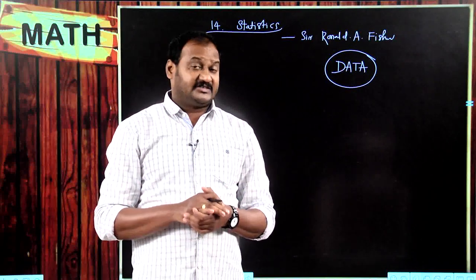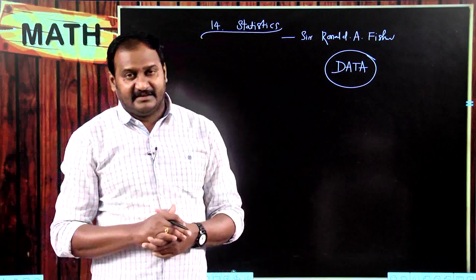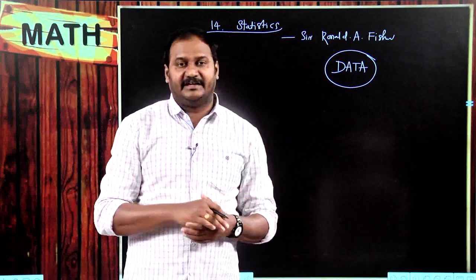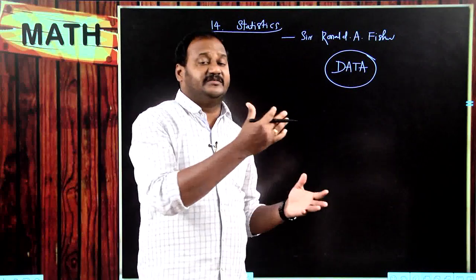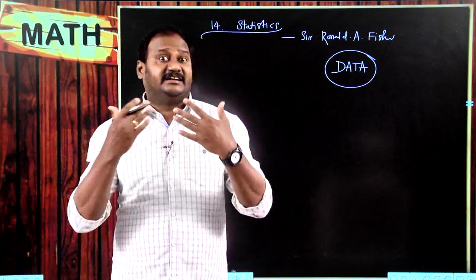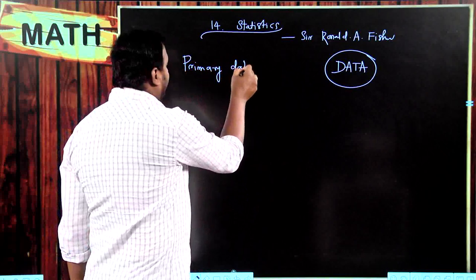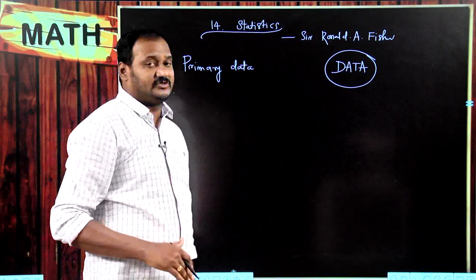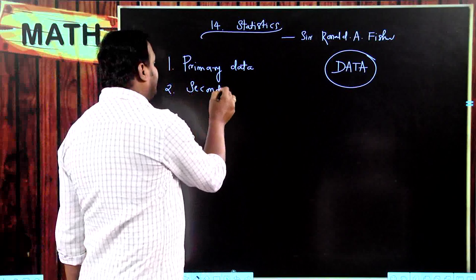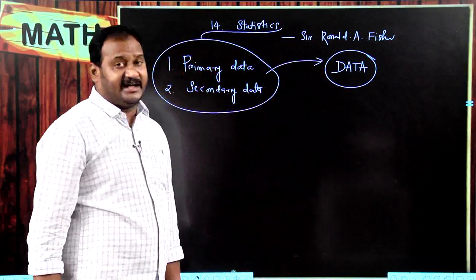For example, if I want to get the marks but that day I am not available in school, then I will get the information through your class leader. The class leader will gather the information and convey the message to me. So there are two kinds of data exchange happening. The data I am directly collecting from you is called primary data, and the other type is secondary data.